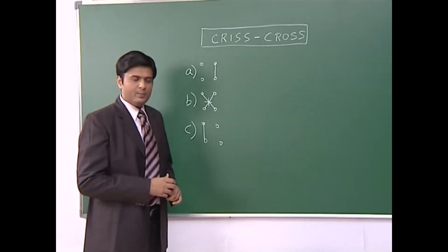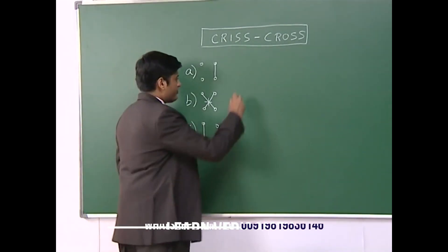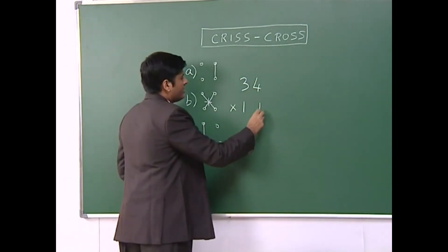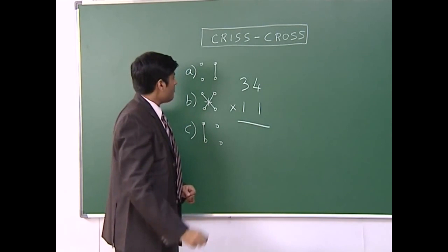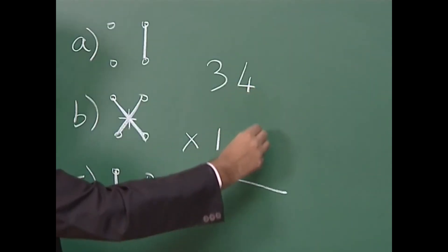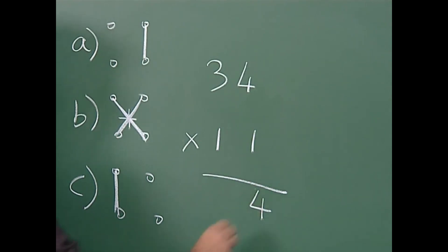So let us take one more simple example. Suppose I have to multiply say 34 by 11. First step says multiply these two numbers. 4 ones are 4. Second step says take like this and like this. We will add both the answers.